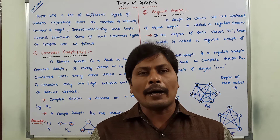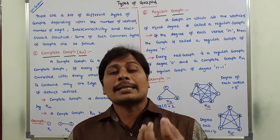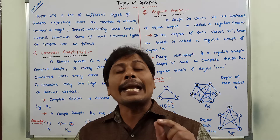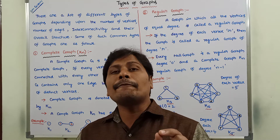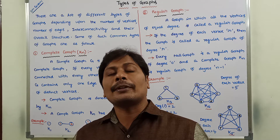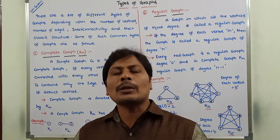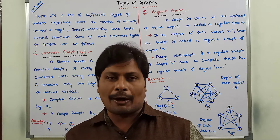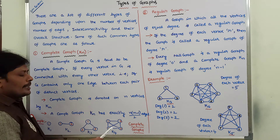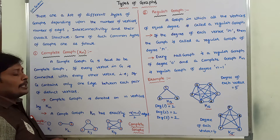Some of the commonly used graphs: the first one is complete graph. A simple graph G is said to be a complete graph if there is a single edge between each and every pair of distinct vertices, or every vertex in the graph is connected with every other vertex in the graph. Now I am explaining with one example.